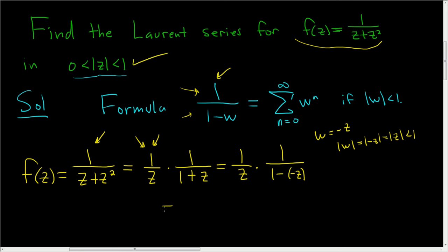So this equals 1/z times the infinite sum, where n starts at 0 and goes to infinity, of (-z)^n.